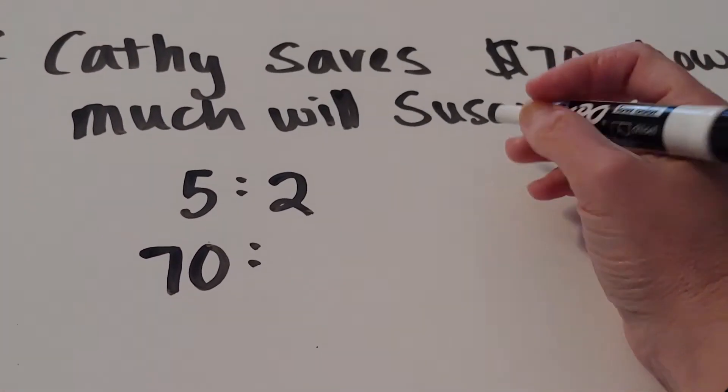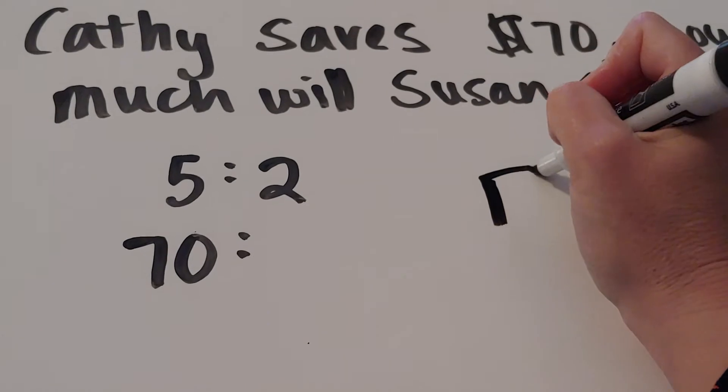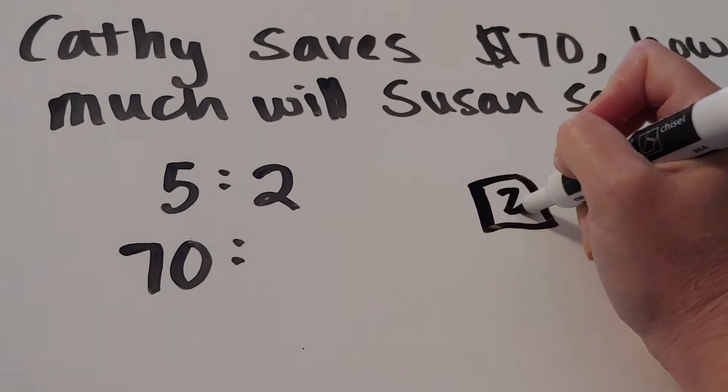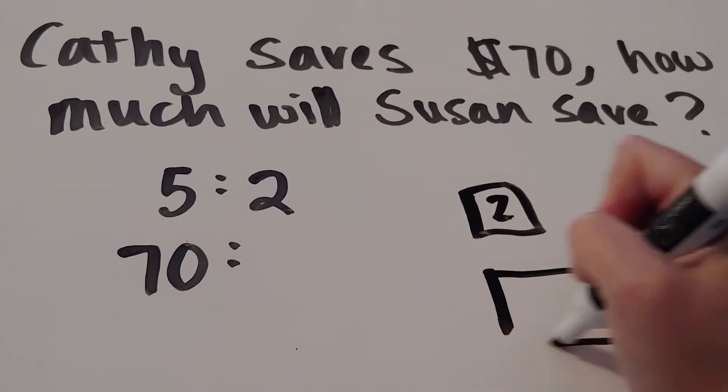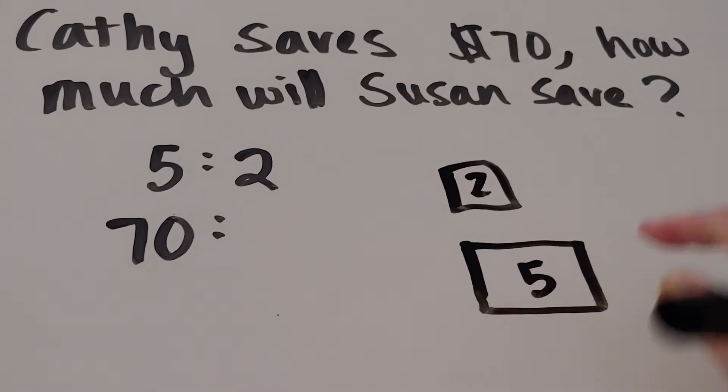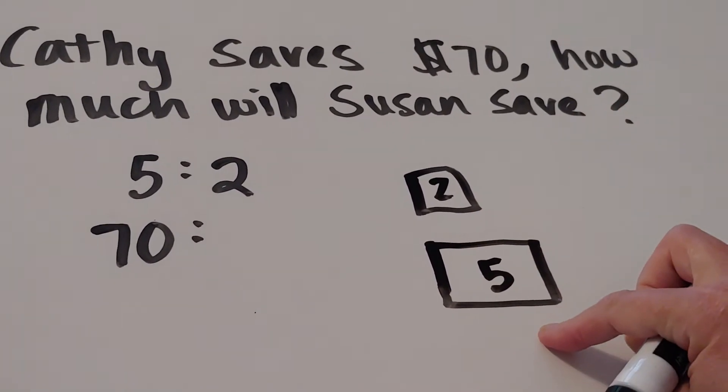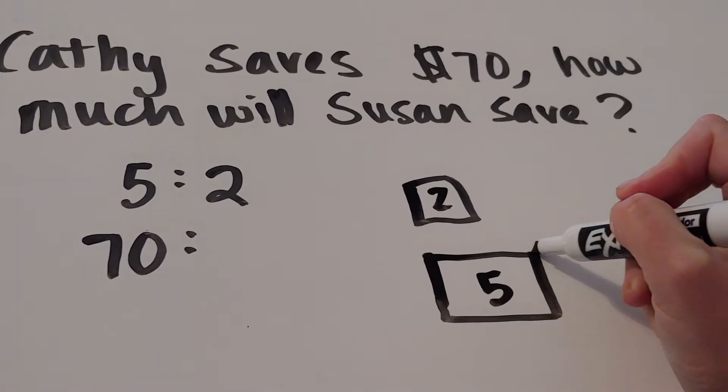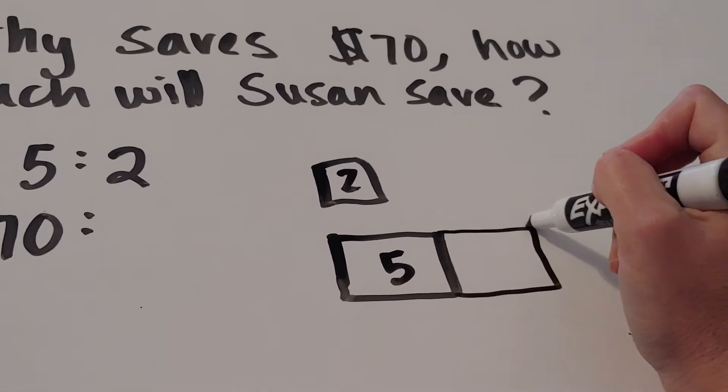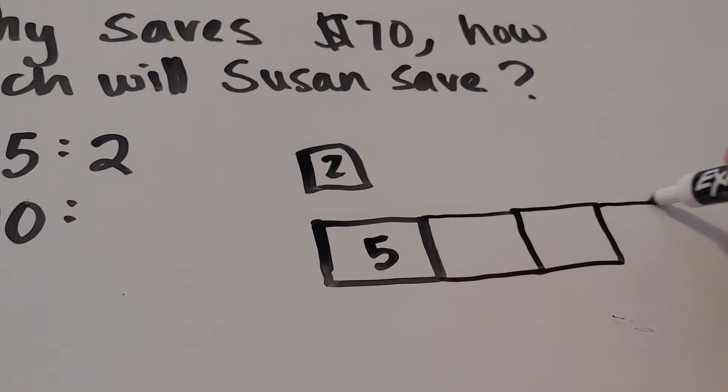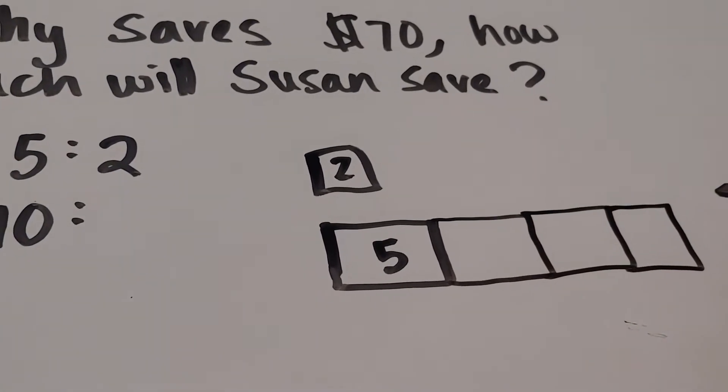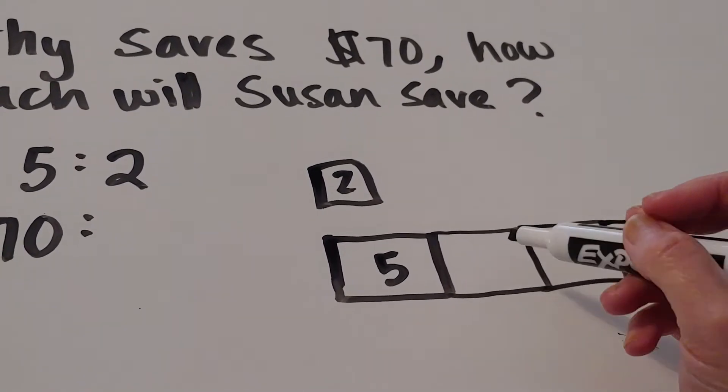The idea here is that I want to show this relationship of two to five. I'm not quite drawing it to scale, but basically I'm saying let's imagine this is two bucks, this is five bucks. Now if I extend this to 70, let's see.